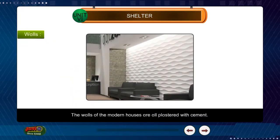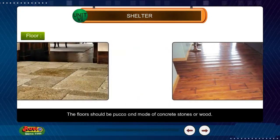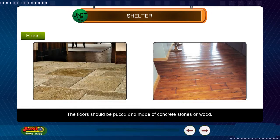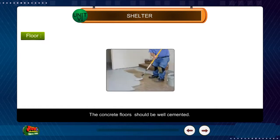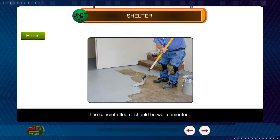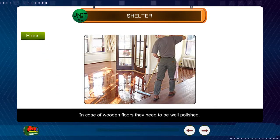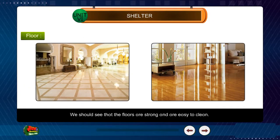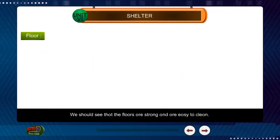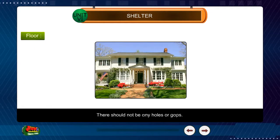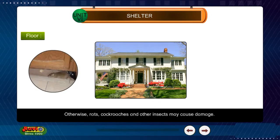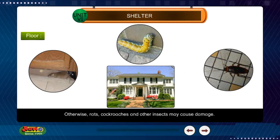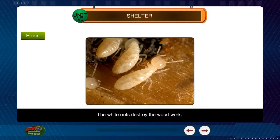The walls of modern houses are all plastered with cement. The floors should be pakka and made of concrete, stones or wood. Concrete floors should be well cemented. In case of wooden floors, they need to be well polished. We should see that the floors are strong and easy to clean. There should not be any holes or gaps; otherwise rats, cockroaches and other insects may cause damage. White ants destroy the woodwork.